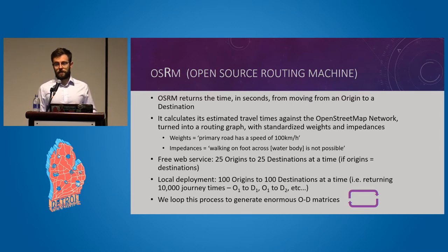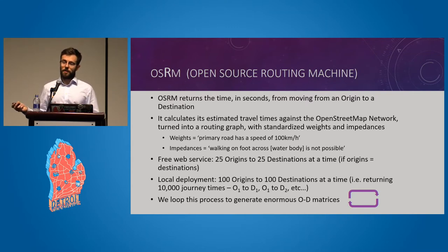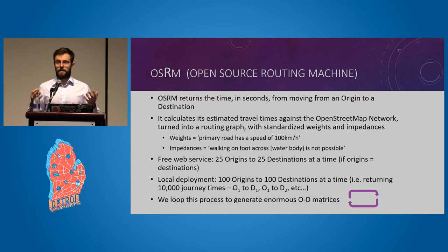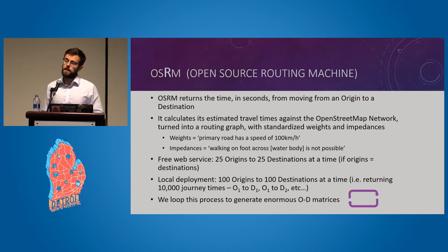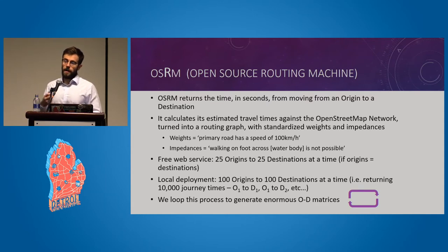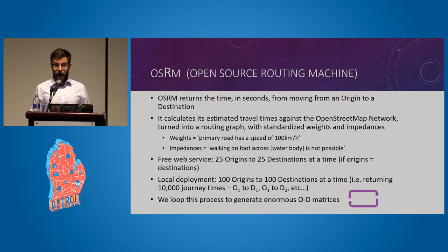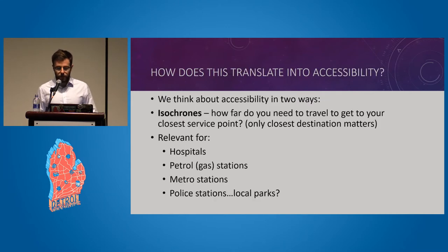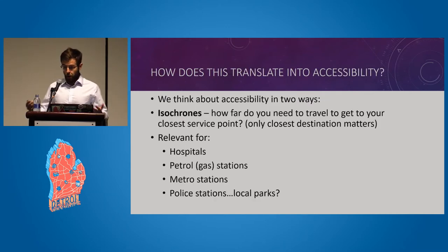The free service hosted by Mapbox allows 25 origins to 25 destinations at a time, which is pretty good. But we needed to scale up massively for this project, so we installed our own version of OSRM on a computing cluster, which allowed us to go up to 100 origins by 100 destinations at a time — 10,000 journeys per second — averaging out at about 36 million travel times calculable per hour against the OpenStreetMap network.